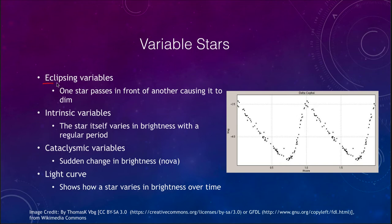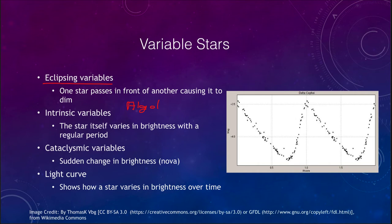We have eclipsing variable stars, where one star passes in front of another and causes it to dim. Algol is an example of this — the demon star in the constellation of Perseus. It is an eclipsing binary star, and you can actually look up when the eclipses will occur and see it get fainter during an eclipse. It is visible to the naked eye, and it was called the demon star because something in the heavens was changing, which was not expected to occur.